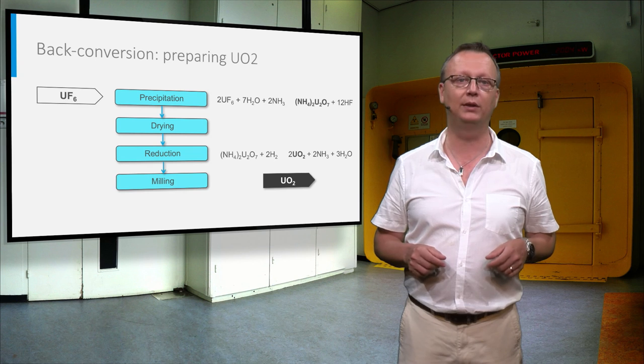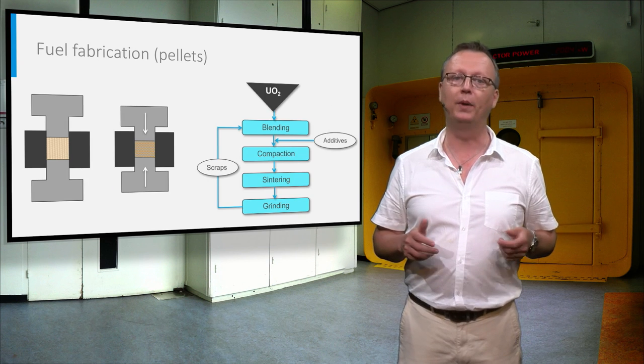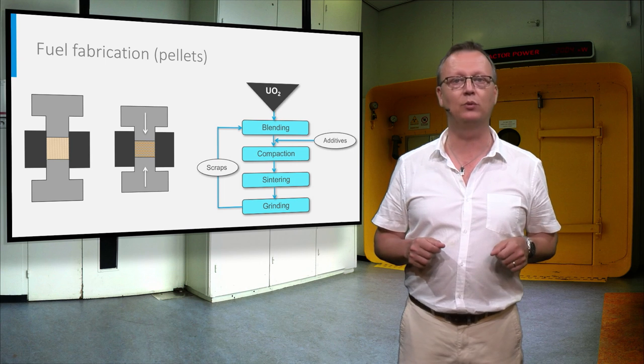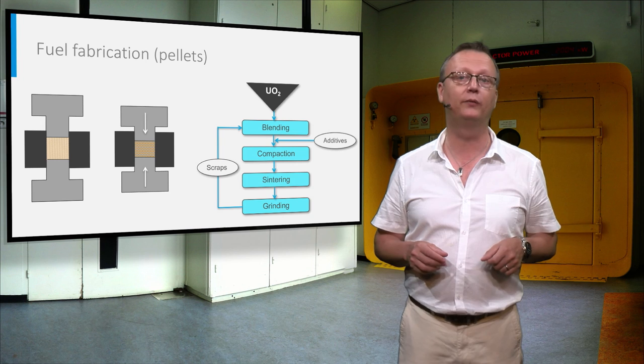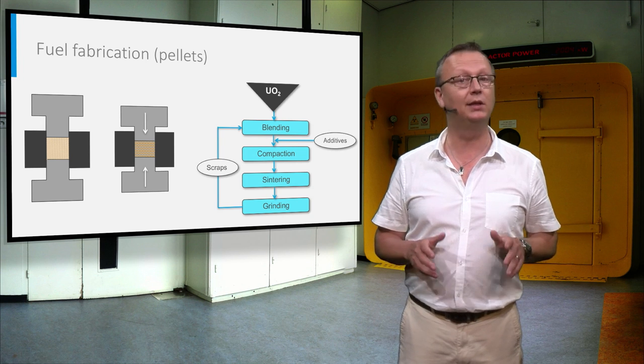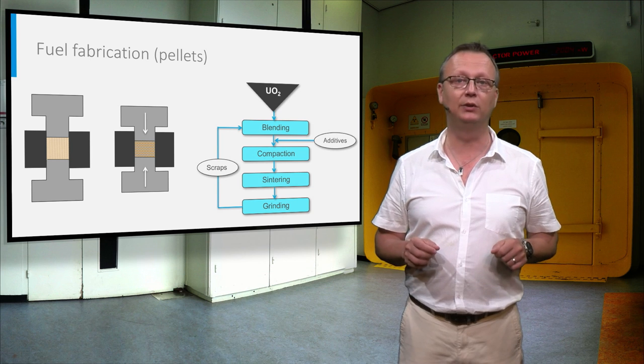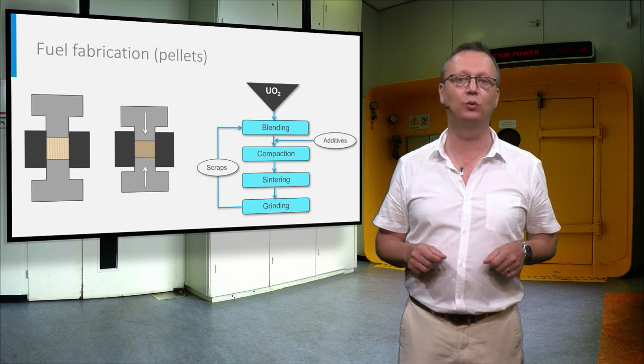UO2 pellets are fabricated from the powder by compacting it in a bi-axial press to a pellet that has a density of about 50% of the theoretical one. This density is not sufficient, and by sintering at 1600 degrees Celsius, this density can be increased to close to 95%.